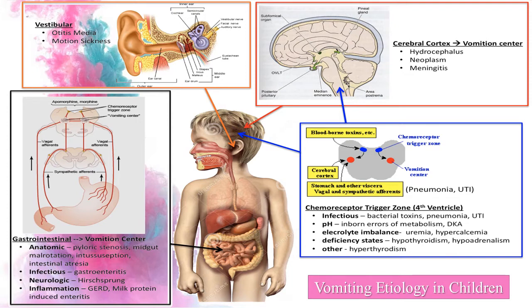Other causes are gastrointestinal, which also induce the vomiting center. Anatomic causes like pyloric stenosis, mid-gut malrotation, intussusception, intestinal atresia, infections like gastroenteritis, neurological causes like Hirschsprung disease, inflammation in case of GERD, and milk protein-induced enteritis. A very important structure is the chemoreceptor trigger zone, present on the fourth ventricle. Infections like bacterial toxins, pneumonia and urinary tract infection, inborn errors of metabolism, diabetic ketoacidosis, electrolyte imbalance in uremia and hypercalcemia, and hyperthyroidism, hypothyroidism and hypoadrenalism are also causes of vomiting in children.